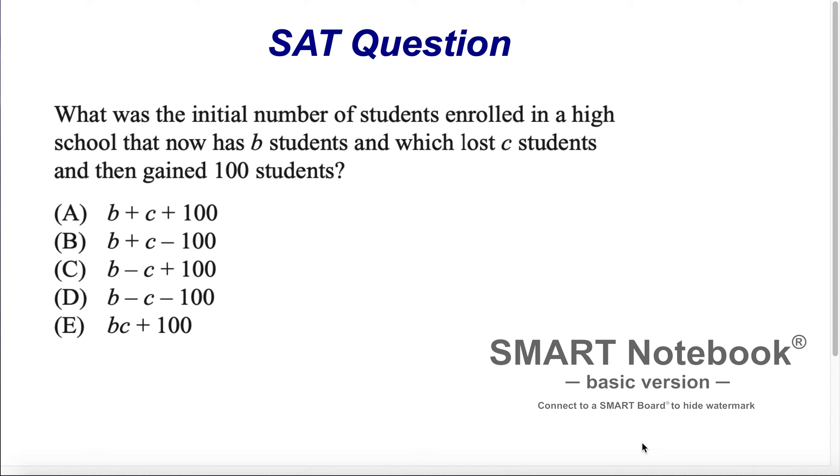What was the initial number of students enrolled in a high school that now has B students and which lost C students and then gained 100 students?